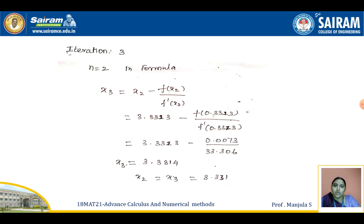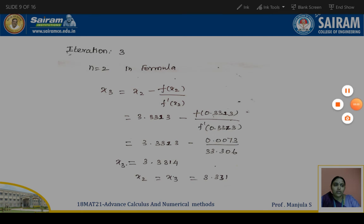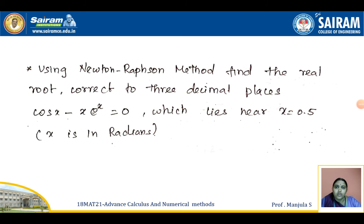Since x₁ and x₂ differ slightly, we go for one more iteration. For the third iteration, putting n = 2, we substitute x₂, f(x₂), and f'(x₂) into the formula. We get x₃ = 3.331. Since x₂ and x₃ are both 3.331, there is no need to go for the next iteration. This is the required root using Newton-Raphson method.